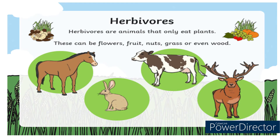Herbivores are animals that only eat plants. These can be flowers, fruits, nuts, grass, or even wood. For example, horse and cow.